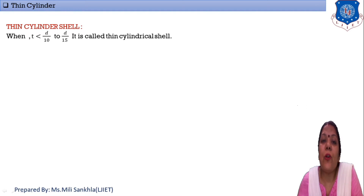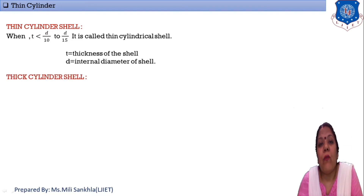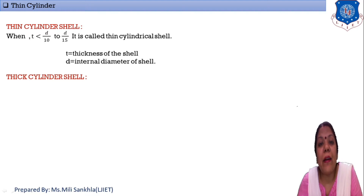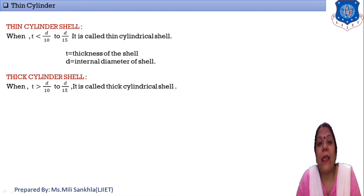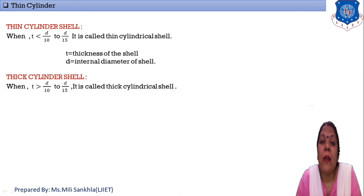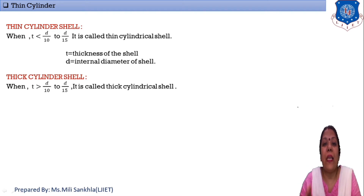Now what is a thick cylinder? If our thickness t is greater than d/10 to d/15, then this cylinder is known as a thick cylinder. Simply, we can see that the classification of thin and thick cylinders both depend upon the relation of thickness and internal diameter.